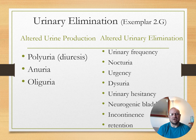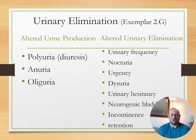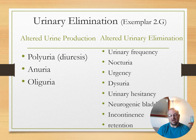Altered urinary elimination includes urinary frequency, nocturia — urinating a lot at night — urgency, dysuria, urinary hesitancy, neurological bladder, incontinence, and retention.